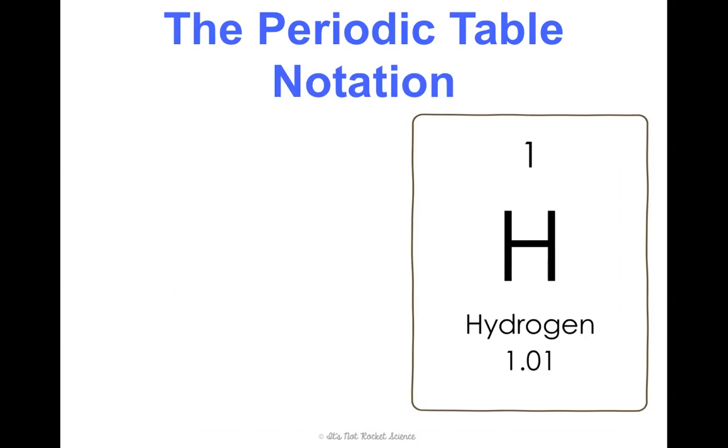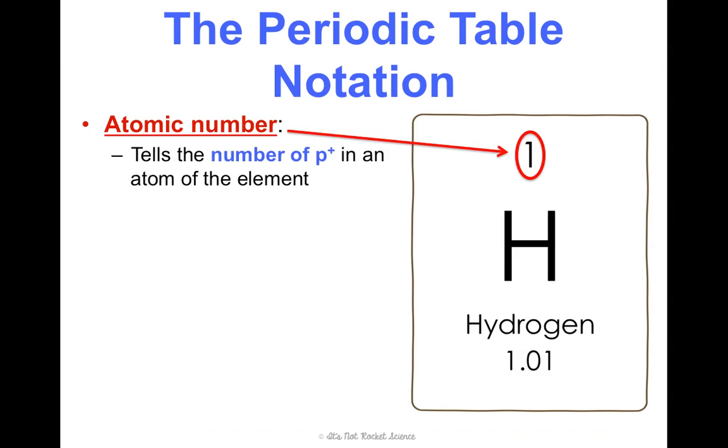So, periodic table notation. Typically when you're looking at a periodic table, there's several things that you're going to see. First is the atomic number. And this tends to be at the top, either the center of the top left or the top right. And this tells the number of protons in an atom of the element. This is how Henry Moseley organized the periodic table of elements. He organized them by atomic number. So if you looked from the top left to right and keep going down row by row, you'll see it's organized one, two, and then the next row, three, four, five, etc. And it keeps going in that order.